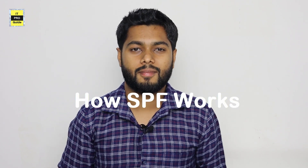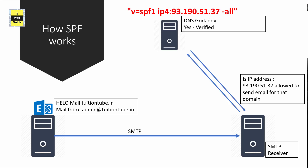Let us get into more detail on how SPF works. I have an Exchange server for TuitionTube.in and I put an SPF record that mail.tuitiontube.in has IP address 93.190.51.37. Any receivers can verify the SPF record — if it matches the sending server IP address, accept the email; otherwise, drop it.